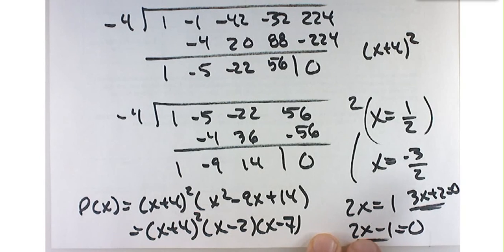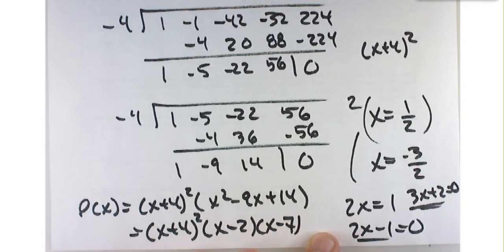So you need to get rid of those fractions when you're going backwards from root to binomial.